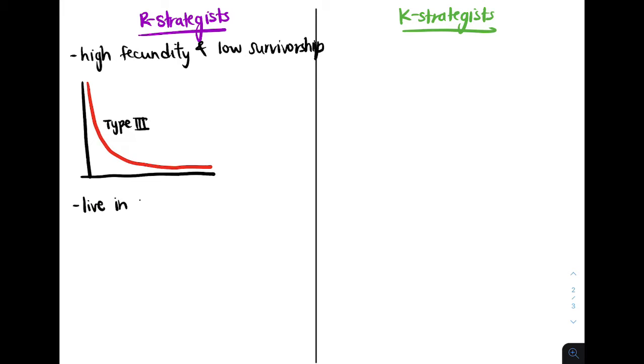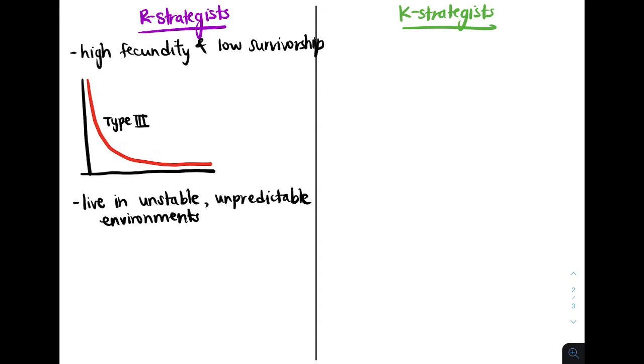One reason why these strategists have high fecundity is because they live in unstable and unpredictable environments. So this means that there might be a lot of predation or mortality. So there is a less likely chance that the organism will survive long enough to reproduce or to a later age. Therefore, it is in the parent's best interest to produce as many offspring as they can, so that even if most of them die because of predation or mortality or other unstable reasons in the environment, at least a few will survive to reproduce.